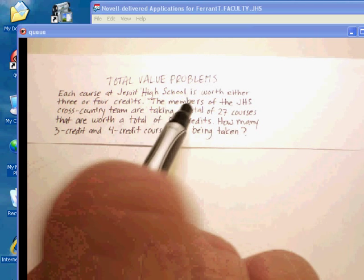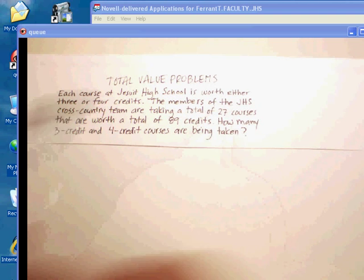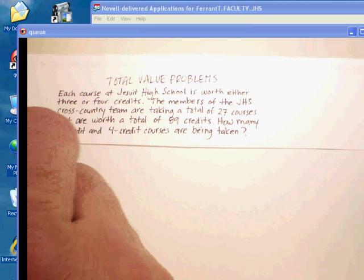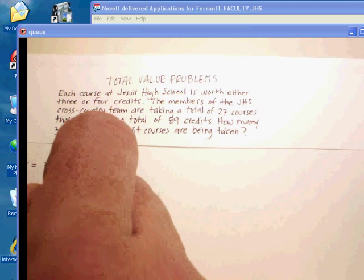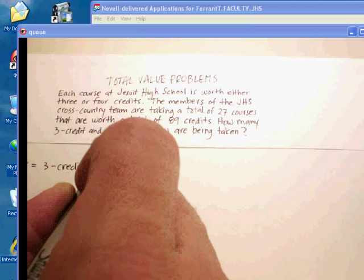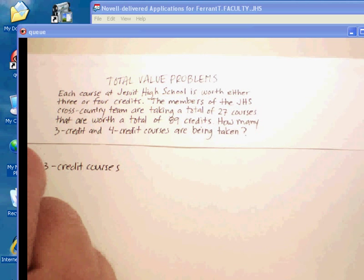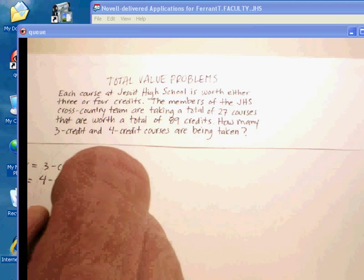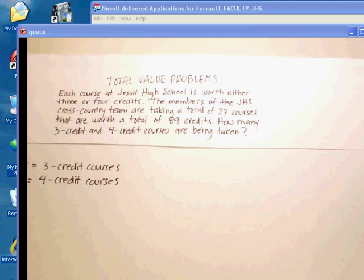It says we have three unit courses and four unit courses, and total is 27 courses. So what I've got is, I'm going to call the X, three unit courses, or three credit courses. I need to always identify my two variables. My Y, I'm going to call my four unit, or four credit courses. So now I've identified what my two variables are. Always do that first.